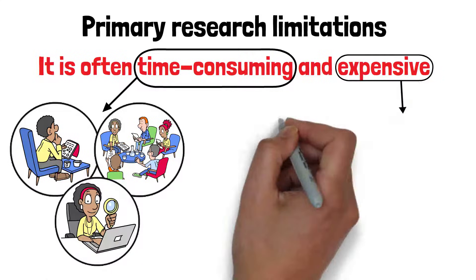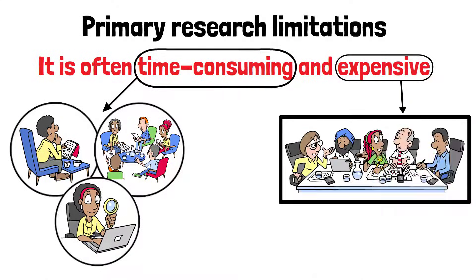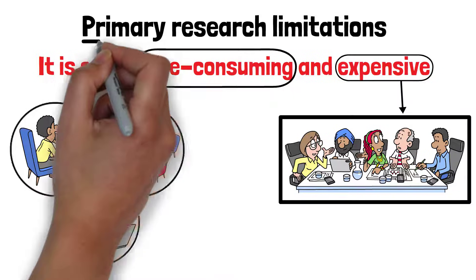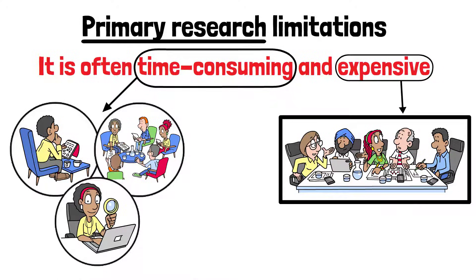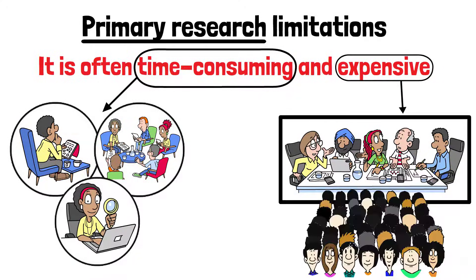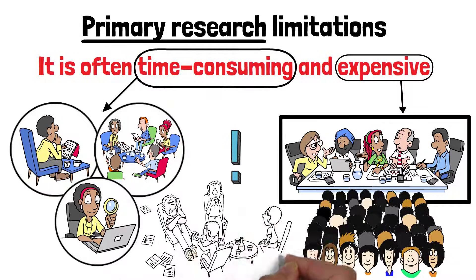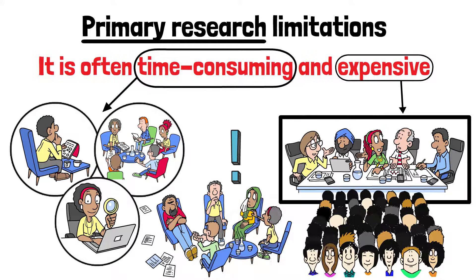For instance, conducting large-scale surveys or experiments requires significant resources. In addition, primary research may be more difficult to conduct because it requires access to participants, which can sometimes be hard to arrange. There is also the risk of bias if the researcher influences the responses, or if the sample is not representative.